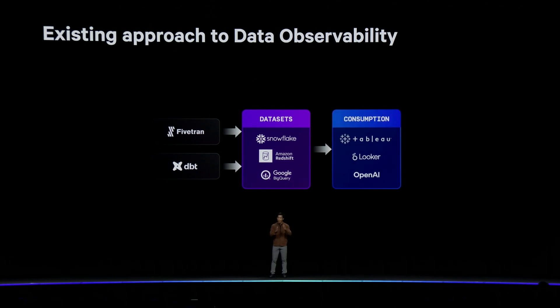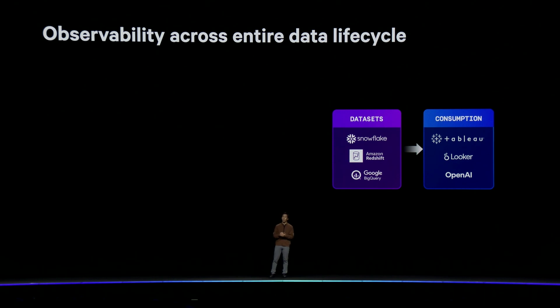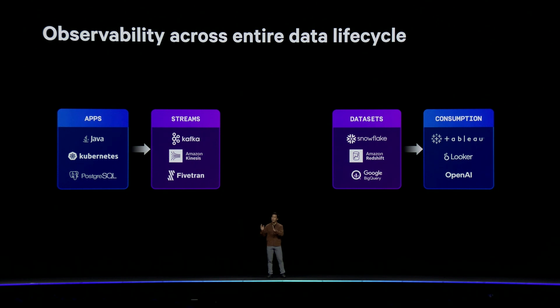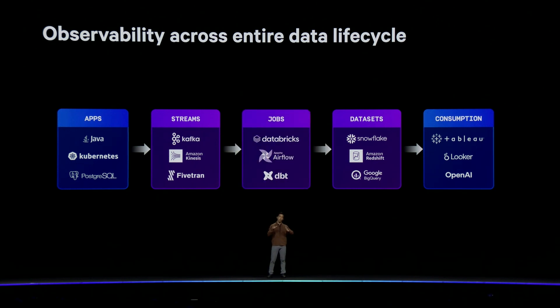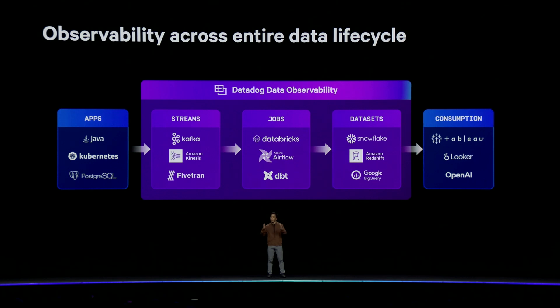Datadog Data Observability is the only product that spans the entire data lifecycle — starting all the way from the services and applications that produce data, to the streams and ingestions that move data, to the jobs that transform data through the warehouse, to the BI and AI systems that consume data. So now you finally have the visibility across the full data lifecycle to detect issues sooner, resolve them faster, and ideally prevent them from happening in the first place.